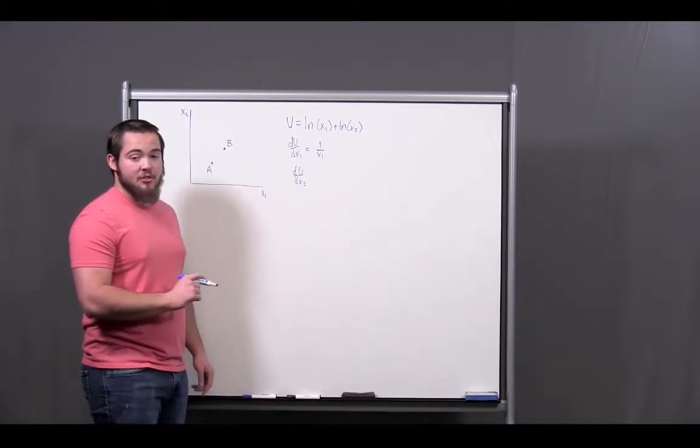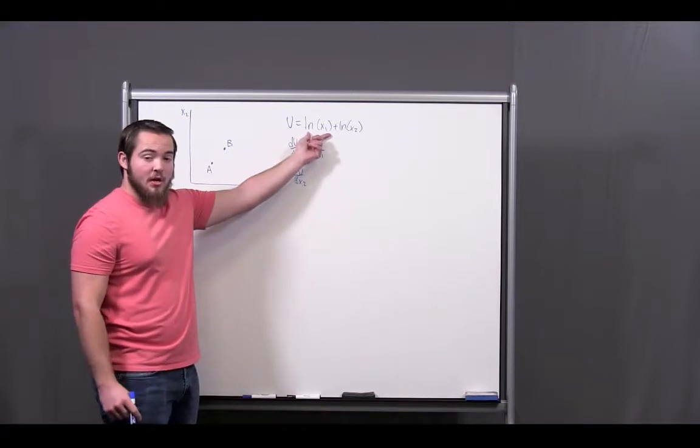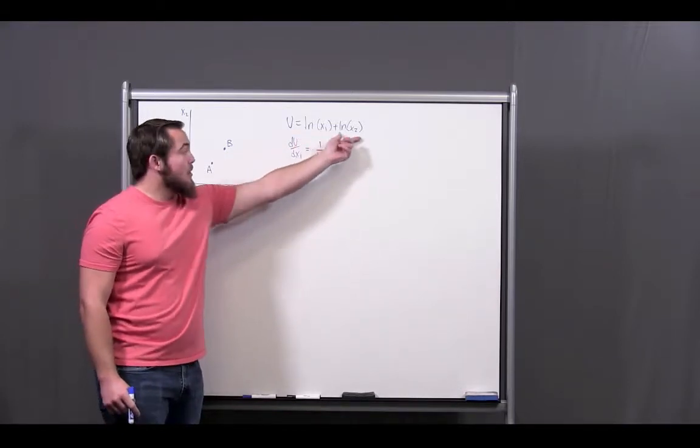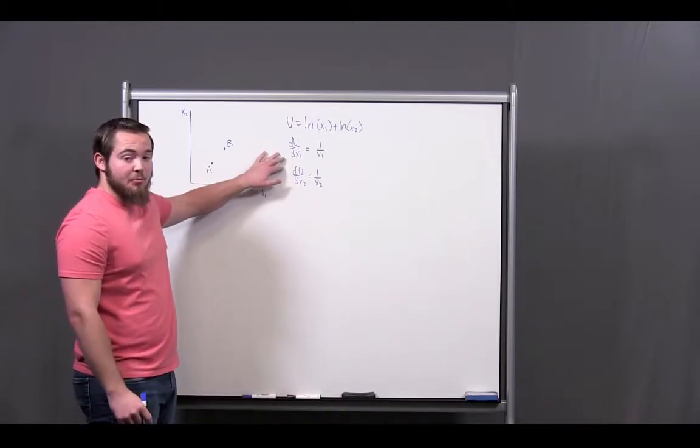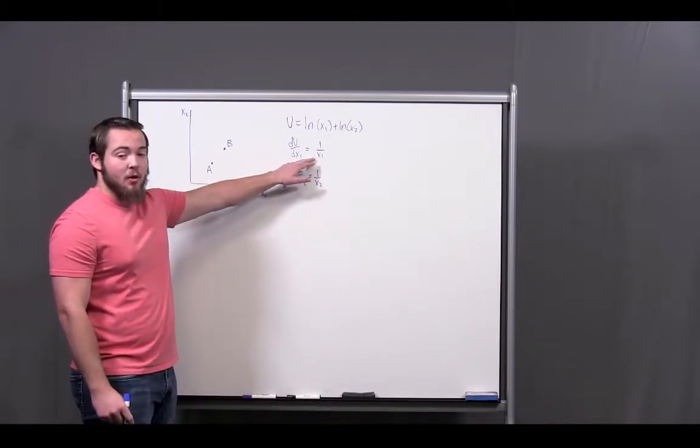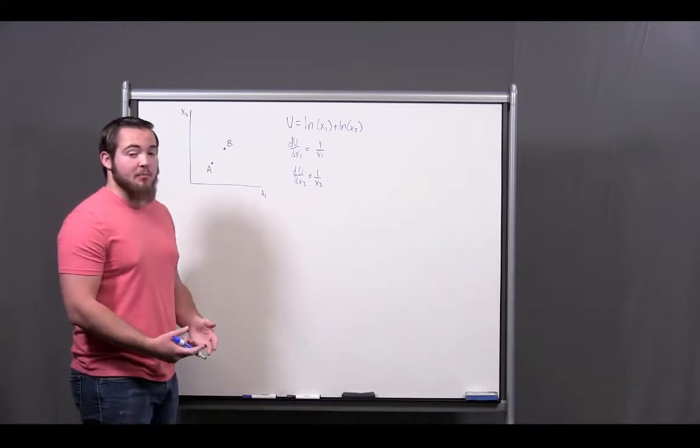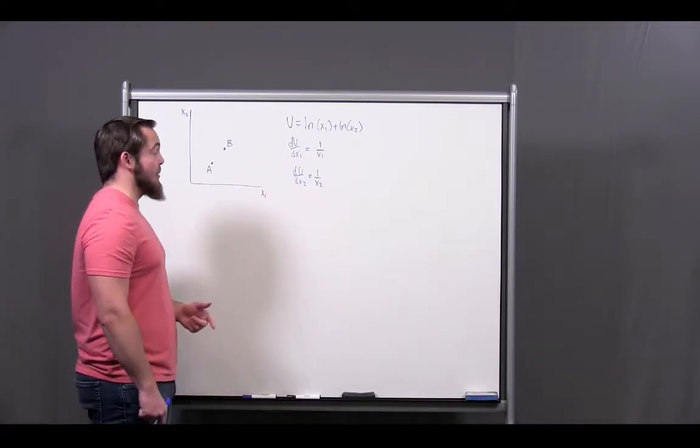And then I have this one, the du dx2. The x1 is constant, so this first term is going to drop. The second term is going to be 1 over x2. Now, what we want to make sure is that these are both always positive. So, what I know about my x1 and my x2 is that because I'm always in the first quadrant, they have to be positive.